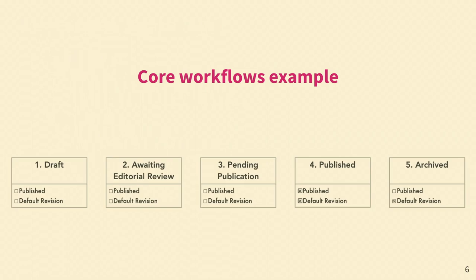Workflows basically consists of two core concepts. The first one is states — the stages that your content can take throughout its lifecycle on the website. We've got five here: Draft, Awaiting Editorial Approval, Pending Publication, Published, and Archived. Each one of those states has two settings: whether that state is published or not, and whether when you save a revision of your content into that state, that revision will become the default or not.